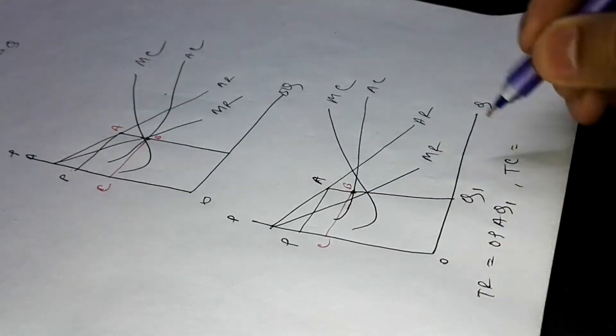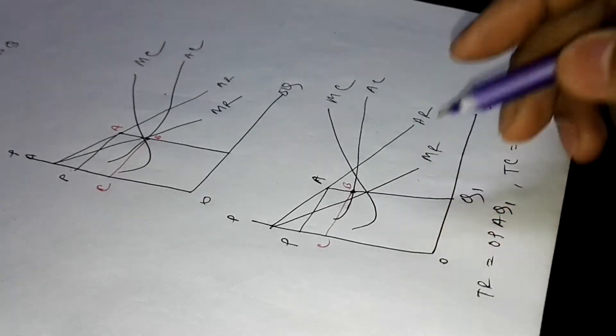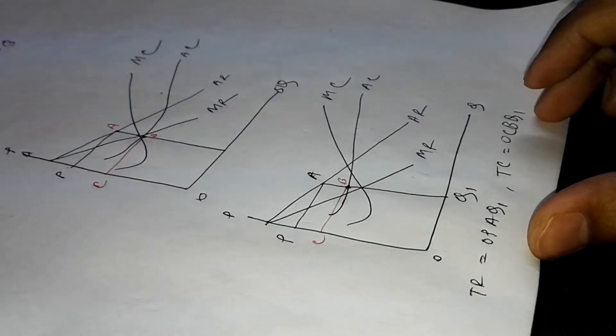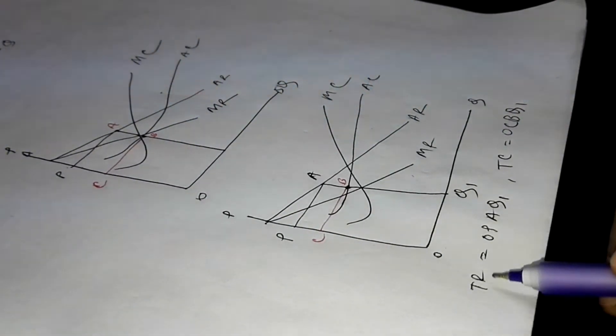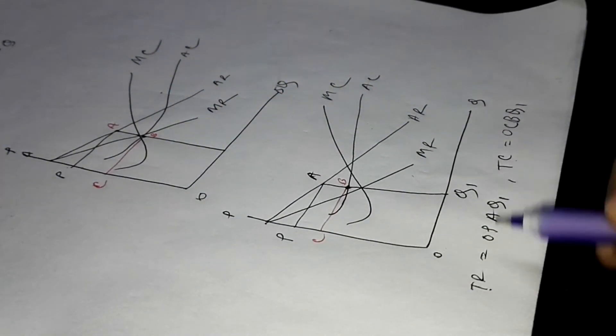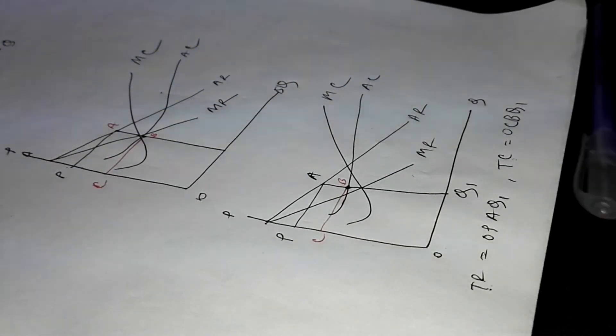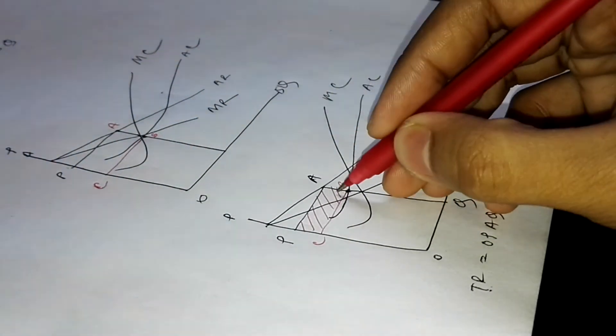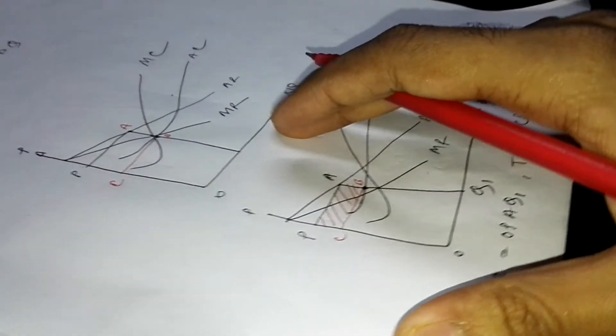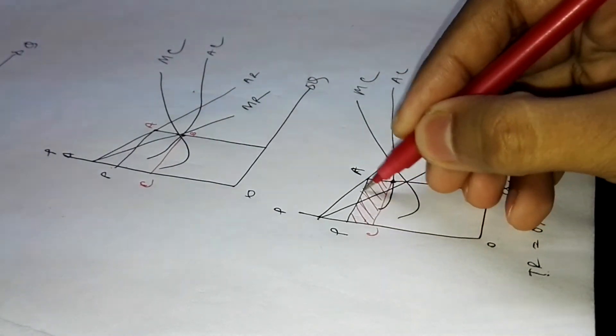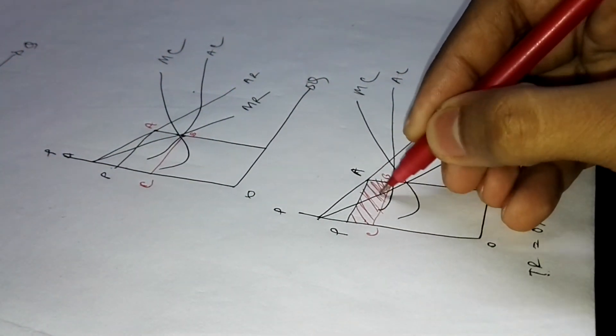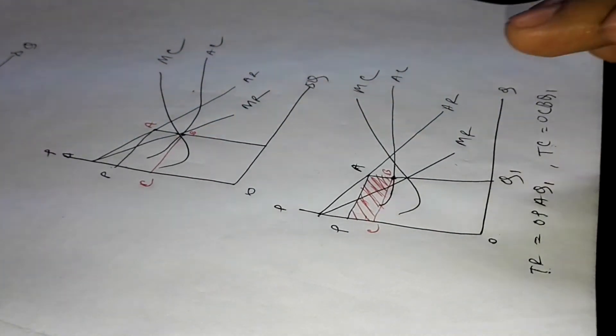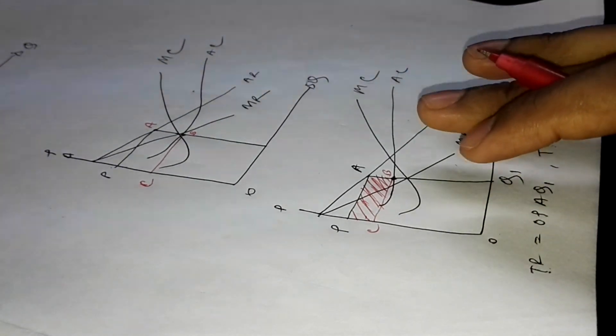Our total cost is OCBQ1. If we subtract TC from TR, we'll get PCBA, this portion as our profit. You can see the shaded portion here which is considered as profit. This is the case how a monopolist firm achieves extreme profit in its production or selling.